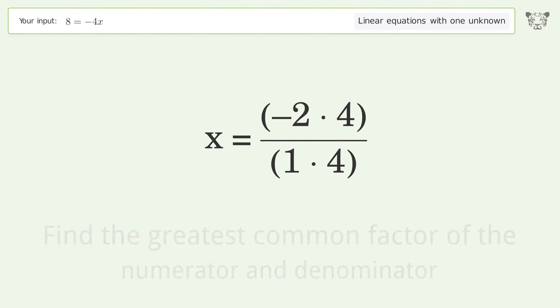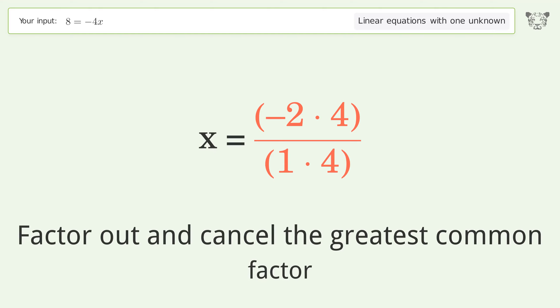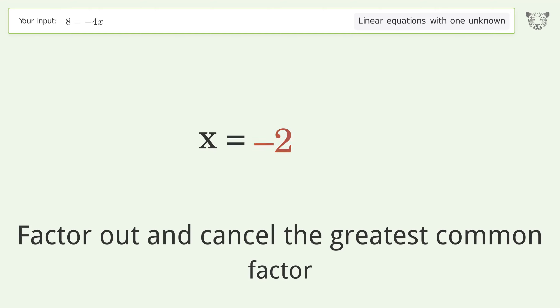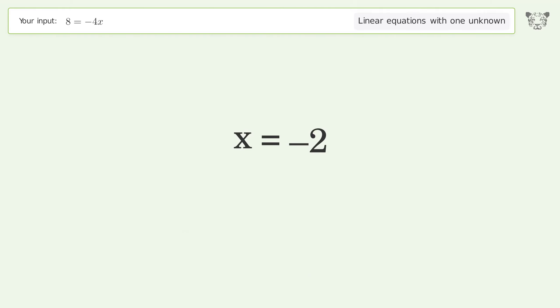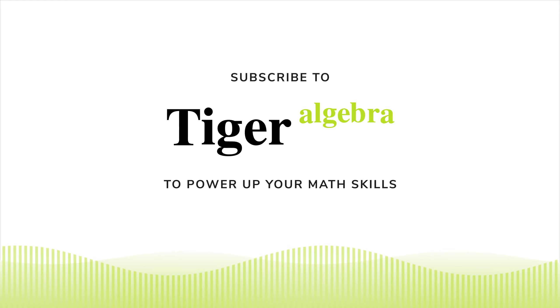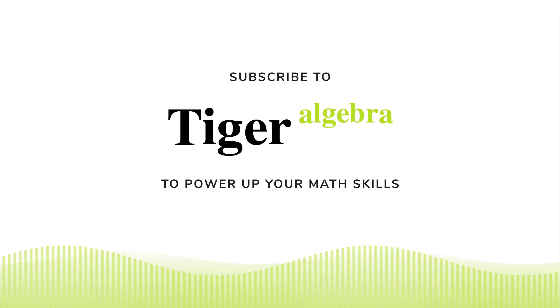Find the greatest common factor of the numerator and denominator. Factor out and cancel the greatest common factor. And so the final result is x equals negative 2.